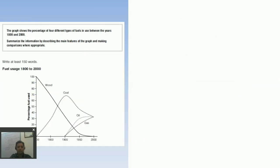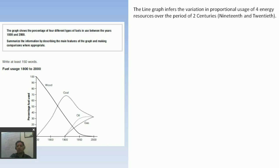Here is the introduction. The line graph infers the variation in proportional usage of four fuel resources over period of two centuries, 19th and 20th. Now it is very much clear that at the start wood was mainly used for all purposes, and with the passage of time the usage of wood declined.